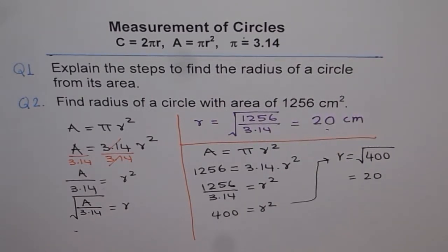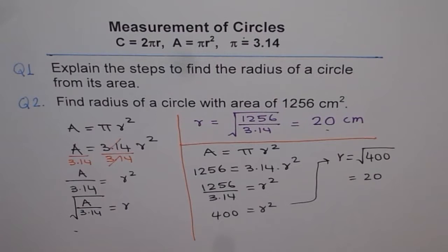So we get 20, the same answer. So that is how you calculate radius of a circle with given area.